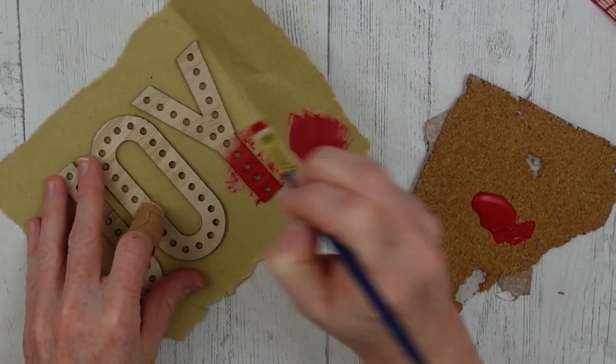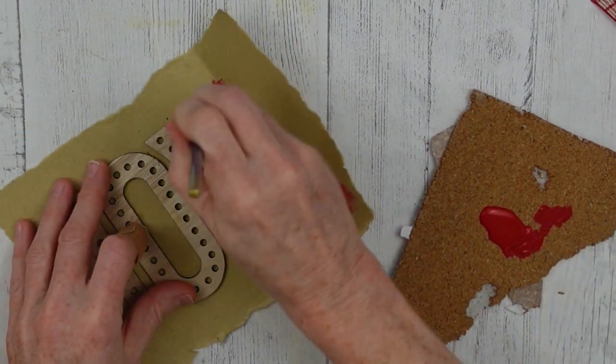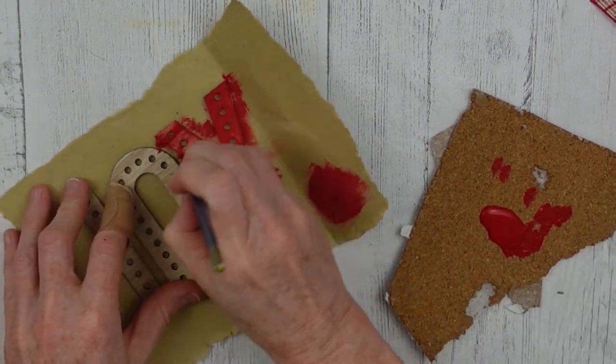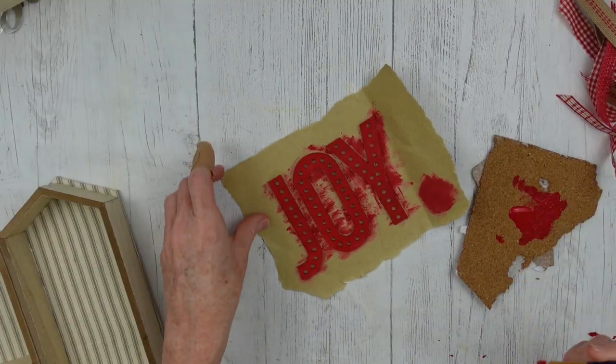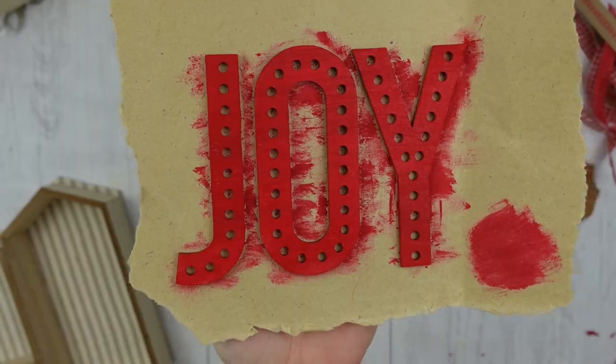Okay, so I've just taken some red paint. You choose whatever color coordinates with what you're doing. And here we go with Joy again. You know what I say about Joy. We're going to color those. Very pretty. And then I'm going to put them aside and let them dry.